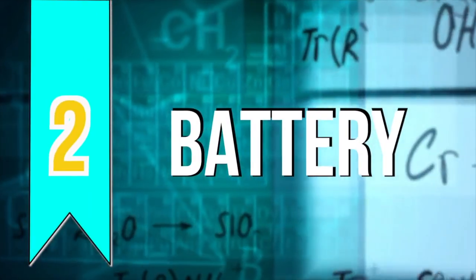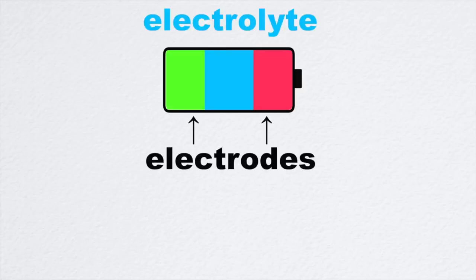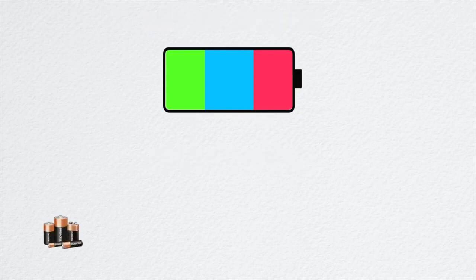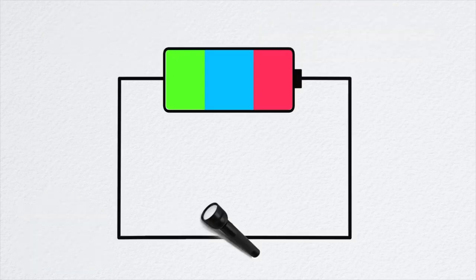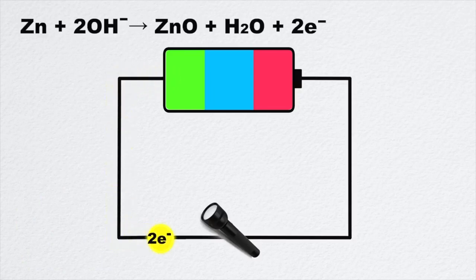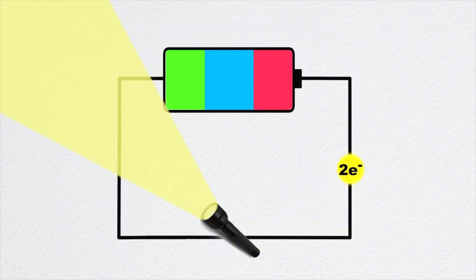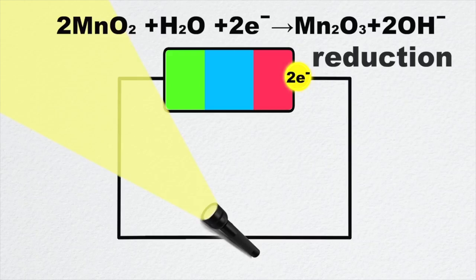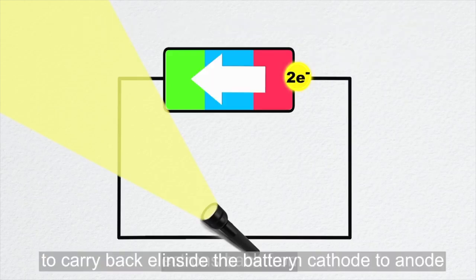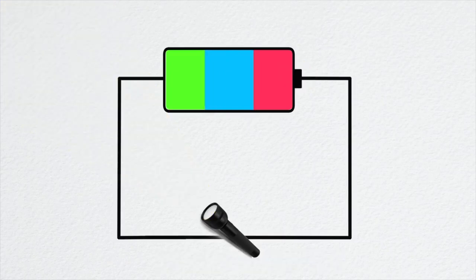Number two: battery. From flashlights to mobile phones, batteries are indispensable in everyday life. Batteries have two electrodes and an electrolyte in between them. Alkaline batteries, such as Duracell, use zinc as the anode and manganese dioxide as the cathode. When you switch your flashlight on, zinc gives up two of its electrons, leaving zinc ions behind — at the anode, it is an oxidation reaction. The electrons pass through the flashlight, turning the lights on, then re-enter the battery at the cathode, where they combine with manganese dioxide to form manganese oxide — a reduction reaction. To carry electrons back from the cathode to the anode inside the battery, charged ions flow through an electrolyte solution between the electrodes, completing the circuit and powering your flashlight.